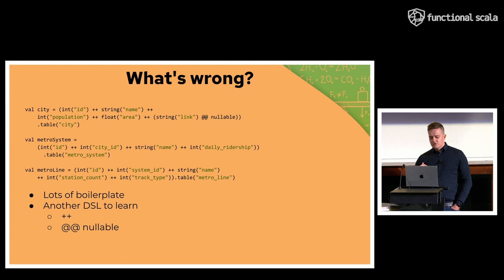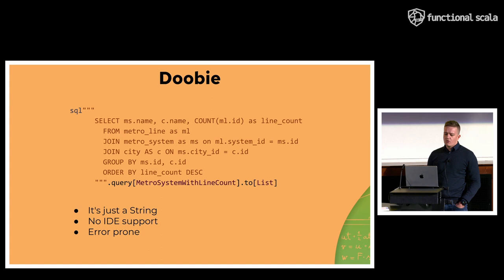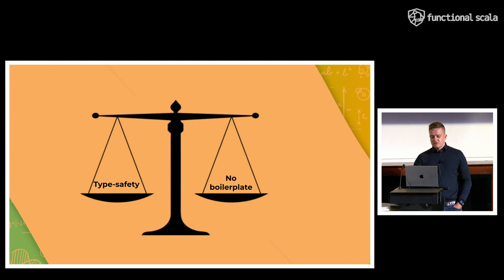So what I would like to do instead is to do what Doobie does. So with Doobie, you just write your query. And if you're familiar with SQL, then you write it right away and that's it. Now, this approach has its problems on its own. So obviously, it's just a string. So you can write a typo. ID won't help you. So maybe, I don't know. It looks like there's this balance between type safety and no boilerplate. And we cannot have both.